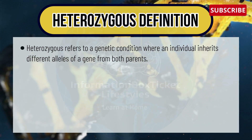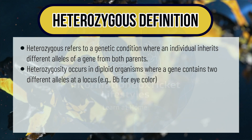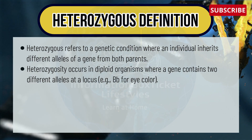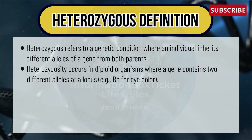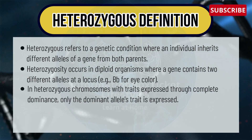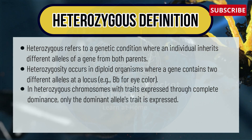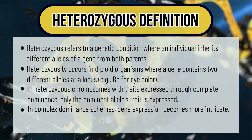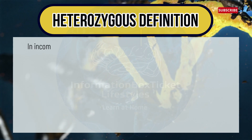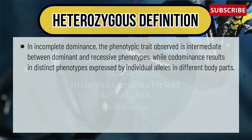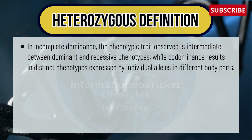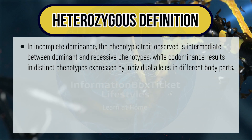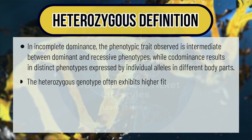Now let's understand what is heterozygous. Heterozygous refers to a genetic condition where an individual inherits different alleles of a gene from both parents. Heterozygosity occurs in diploid organisms where a gene contains two different alleles at a locus — for example, B capital and small b for eye color. In heterozygous chromosomes where a trait is expressed through complete dominance, only the dominant allele's trait is expressed. In codominance, gene expression becomes more intricate.